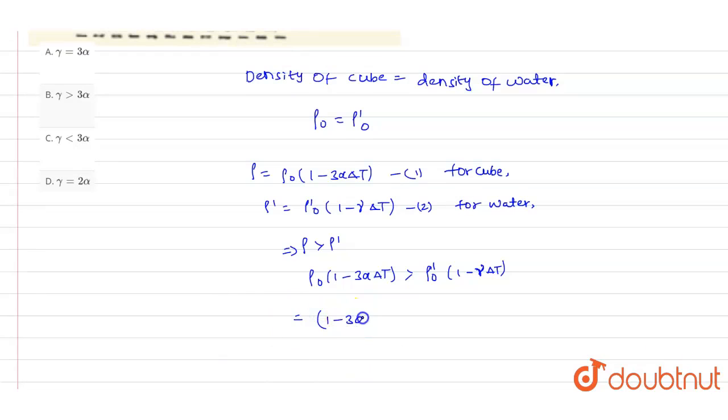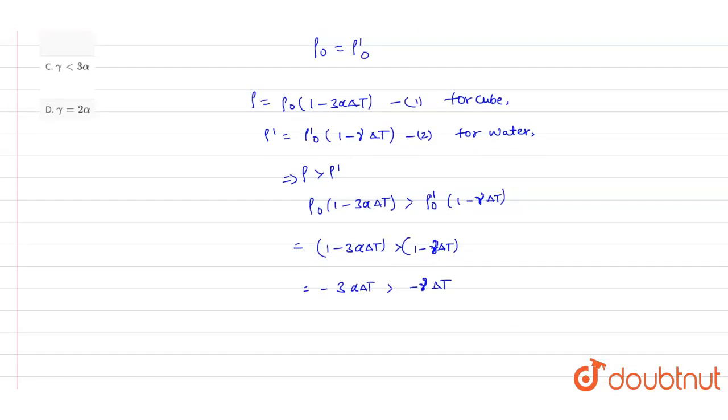So if we simplify this, 1 minus 3αΔt greater than 1 minus γΔt. We can write this as minus 3αΔt greater than minus γΔt.